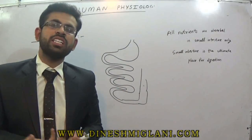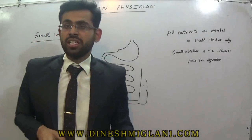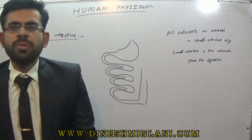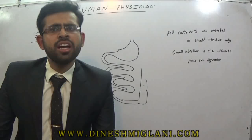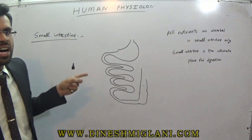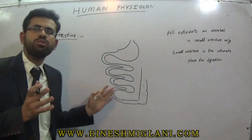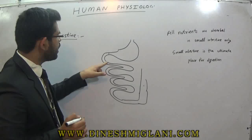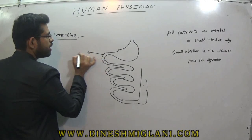The small intestine is the ultimate place for digestion — this is the last point for digestion. After this, digestion is not possible. All enzymes of the digestive system are present here. Whatever nutrients you eat — even DNA — there are enzymes to break them down here. All proteins and amino acids can be broken down in the small intestine.